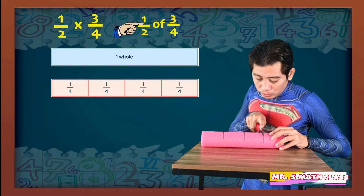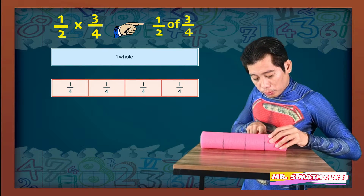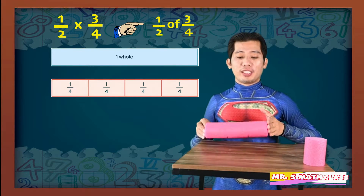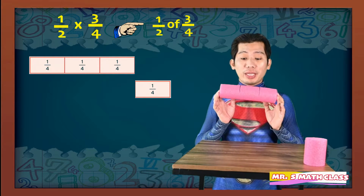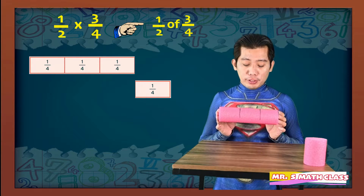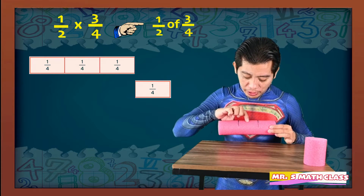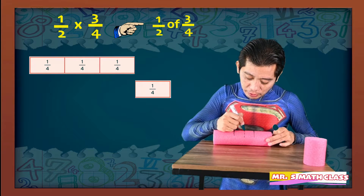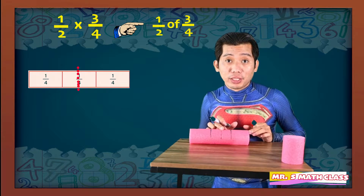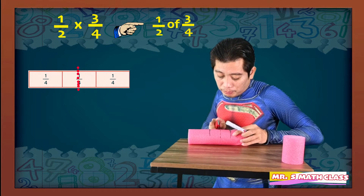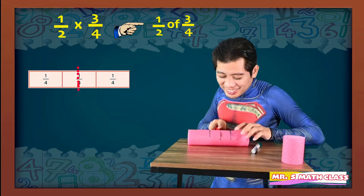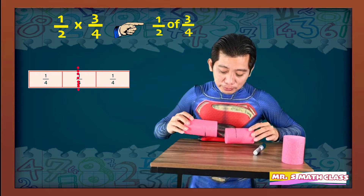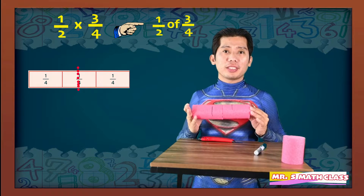So we'll cut it. This is the fourth that we don't need. This one is the three-fourths that we need to work on. Now we have to get one half of this three-fourths. So one half of this three-fourths is somewhere here — somewhere in the middle of this portion. So let's put the marking. And this is now the one half of the three-fourths. Let's try to cut them. And this is now the one half of the three-fourths.